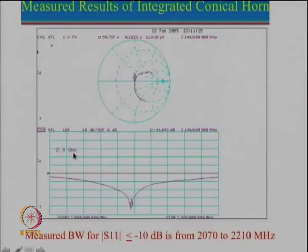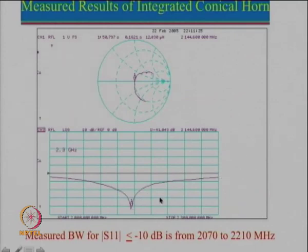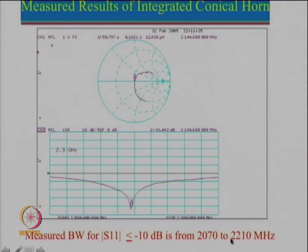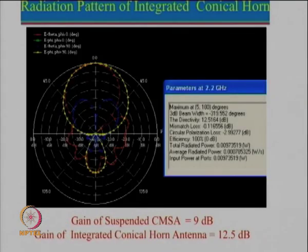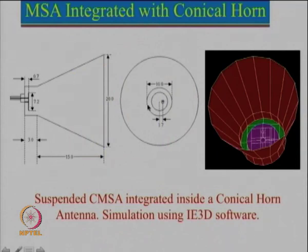Based on these simulations we did the fabrication and this is the measured result of the integrated conical horn antenna. The Smith chart plot shows fairly good impedance matching and the S11 plot shows that the measured bandwidth for S11 less than minus 10 dB is from 2070 to 2210 MHz. This meets the bandwidth requirement for 3G transmission, which takes place from 2110 to 2170 MHz, so this band covers the entire 3G transmit band. One can also transmit very high power because a metallic plate is used — one can even pump in a kilowatt of power through this particular antenna.